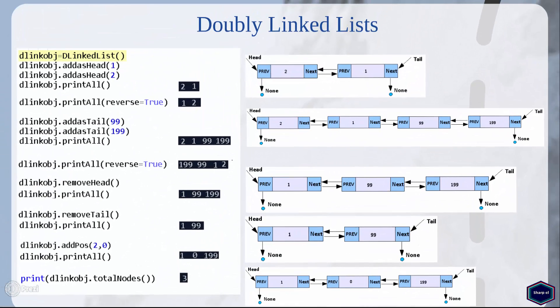In main I have created an instance of the DoublyLinkedList class, and by calling different methods of the DoublyLinkedList class I can add and remove nodes in my list. So this was a very simple example of a doubly linked list. I hope you now have a basic understanding of a doubly linked list in Python.